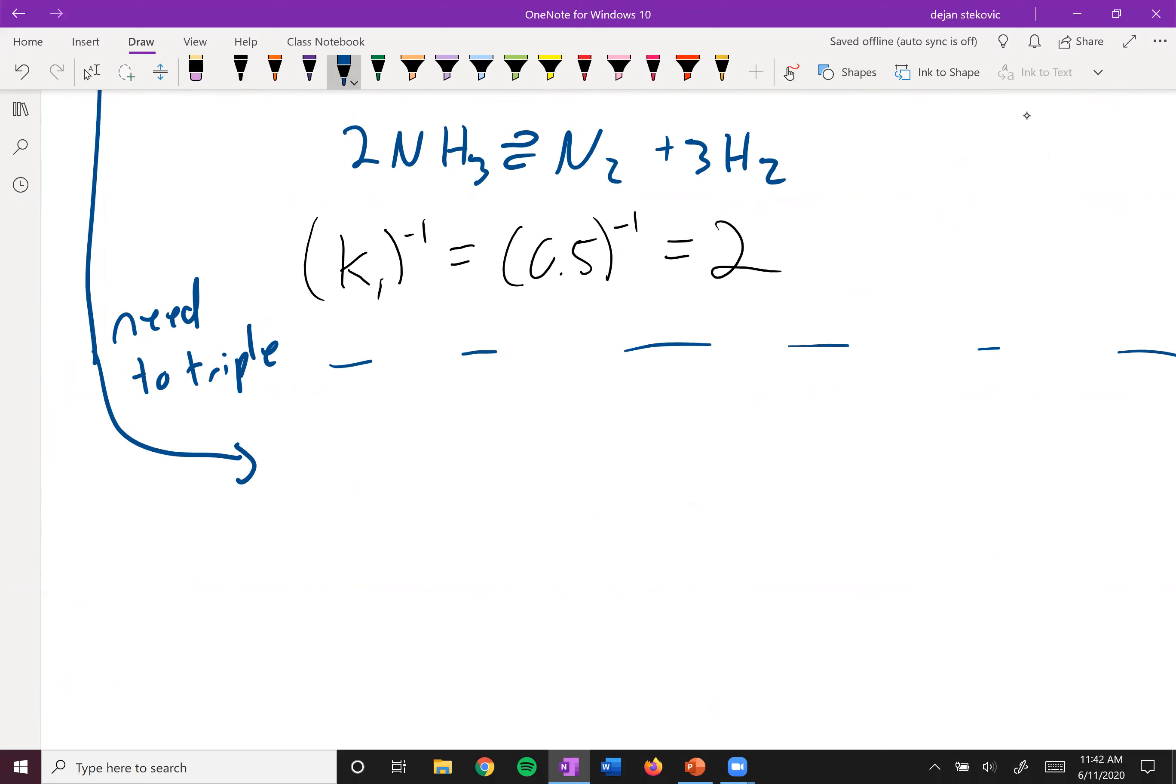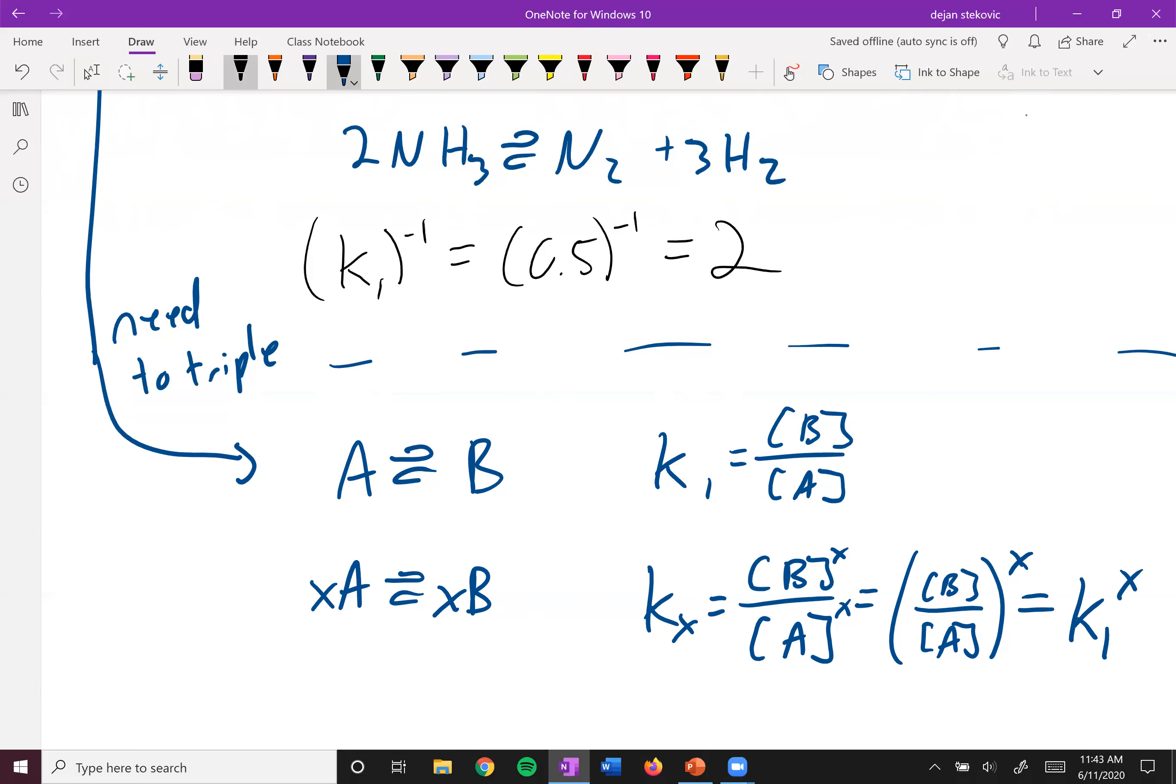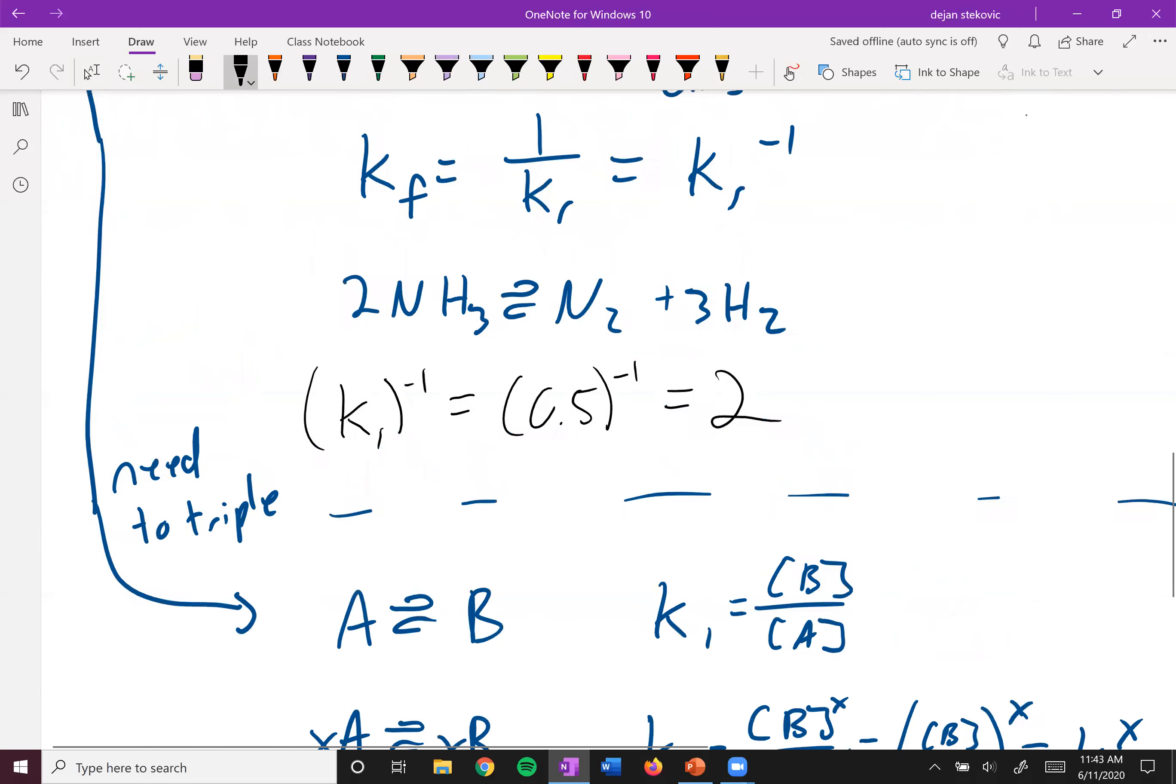But here's just kind of a generic example. If we have A in equilibrium with B, we can write K1 here, B over A. And then if we have different coefficients, something like XA to XB, we'll write this as KX, then we're going to raise it to that exponent. And so we can pull this exponent out in front, or out to the side anyways, X. And so what we can say is that KX will be equal to K1 to the X power.